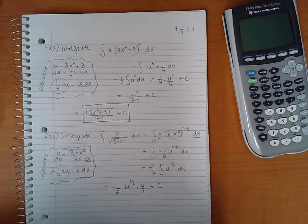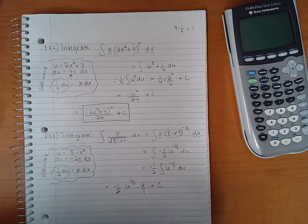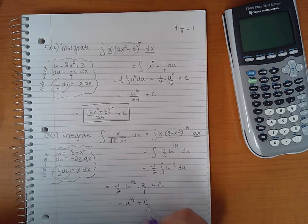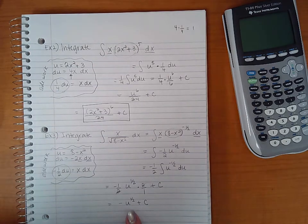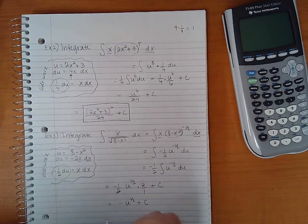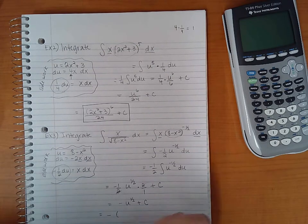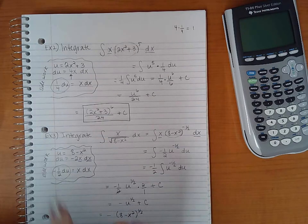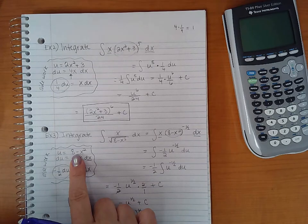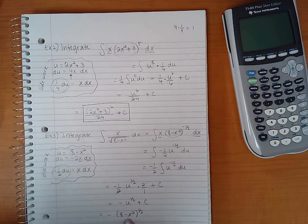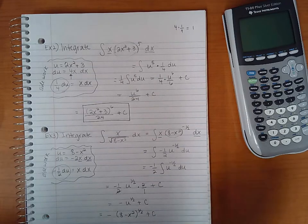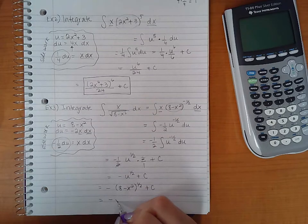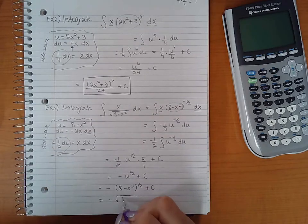Our constant of integration, I'm sorry. So these twos will reduce, leaving me with negative u to the positive 1 half exponent plus c. Again, I'm not completely finished until this is in terms of x's. So I do have to back substitute and plug in what is equivalent to u. So u equals 8 minus x squared, which means this should be 8 minus x squared raised to the 1 half plus c. And then if I wanted to rewrite it, which I'm not required to, but if I wanted to, that would be a square root.